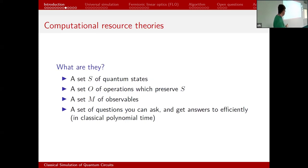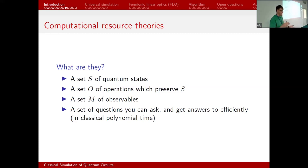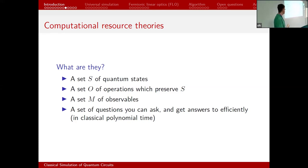Now I can introduce the main tool: computational resource theories. These consist of a set of free states, free gates, and free measurements. The key point is that the free operations map free states to free states. The word 'computational' in the name is because you can simulate this setup efficiently — classically, in polynomial time. You can efficiently compute anything you like about this setup.